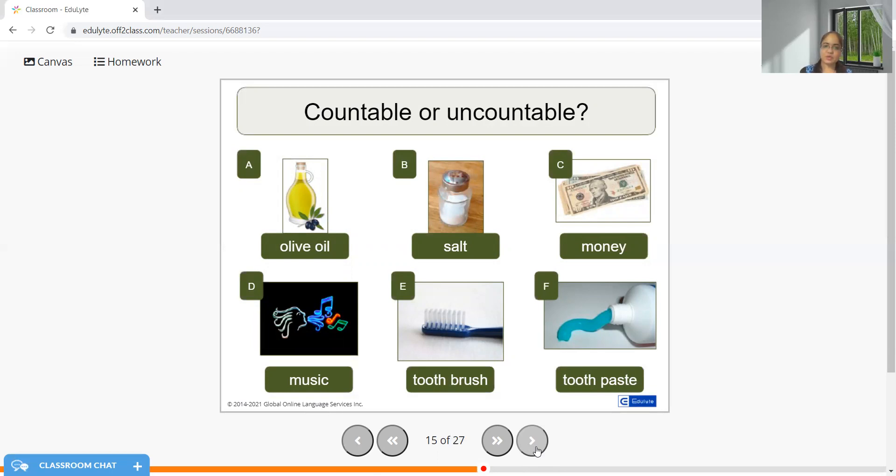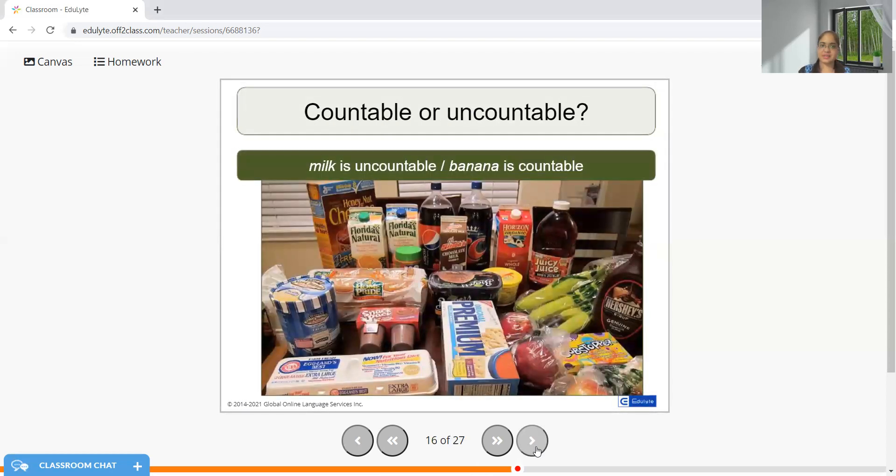On the other hand, salt, toothbrush is countable, toothpaste. However, if you're talking about the packaging, if you're talking about the quantity like I want to purchase toothpaste, the tubes of toothpaste, then tubes can be countable. How many tubes do you want? I want five tubes of toothpaste. But toothpaste is P-A-S-T-E-S, that is not right, because then this paste becomes uncountable. So be careful of what it is that you are using.